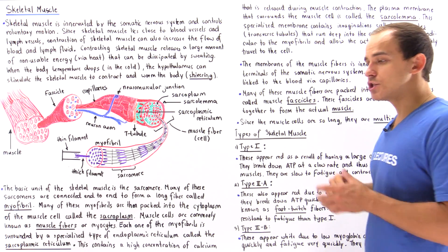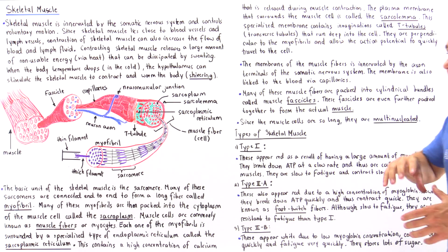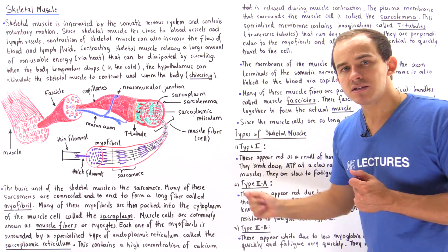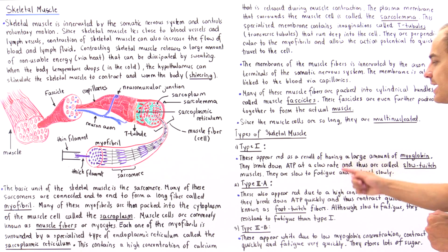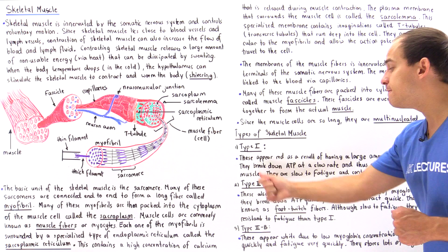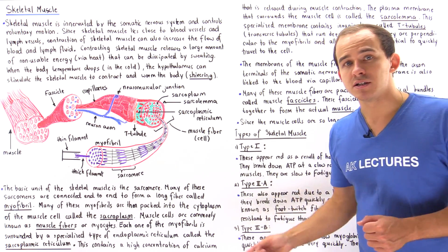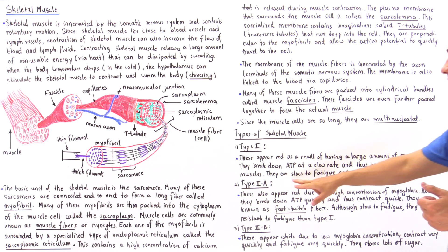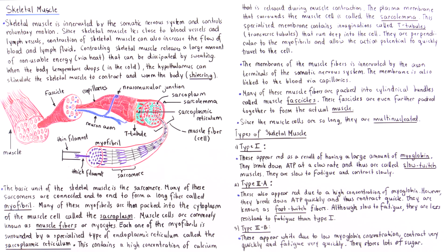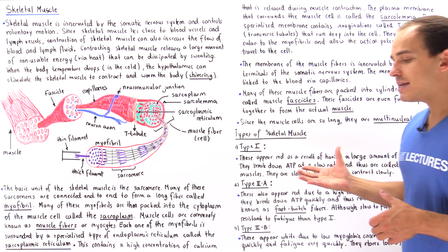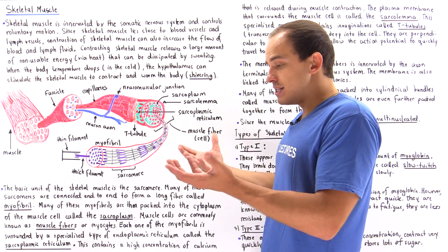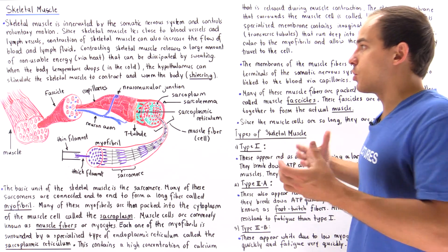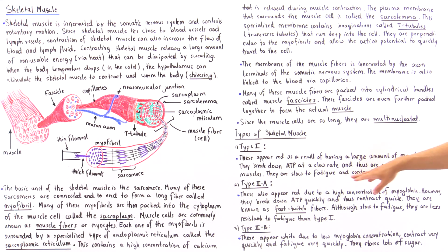Type 1 skeletal muscle also contains a very high concentration of mitochondria and breaks down ATP very slowly. As a result, these are known as slow twitch muscles — they have a very low velocity of contraction. Because of this, they are slow to fatigue. These are our postural skeletal muscles found in the back, which give us our posture and allow us to stand and walk without bending over, which is exactly why they are slow to fatigue.